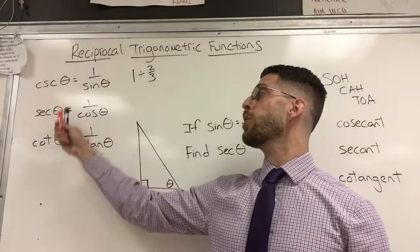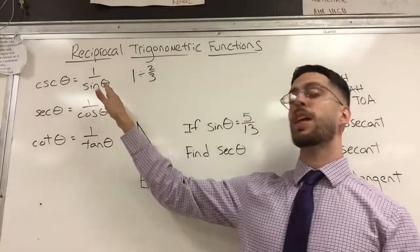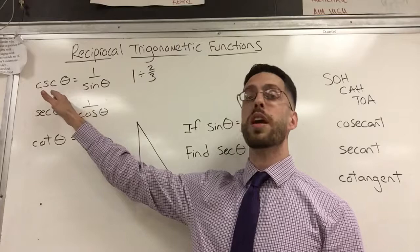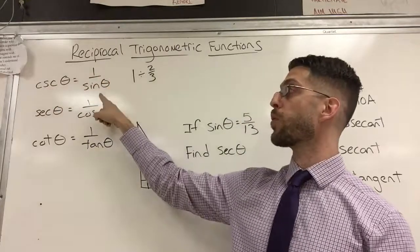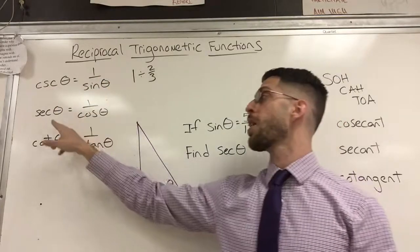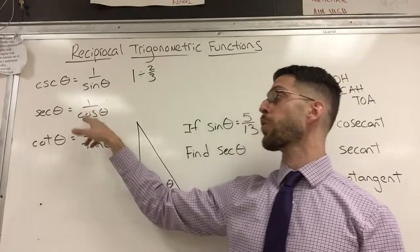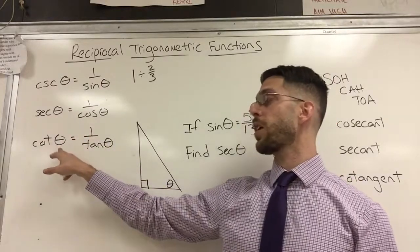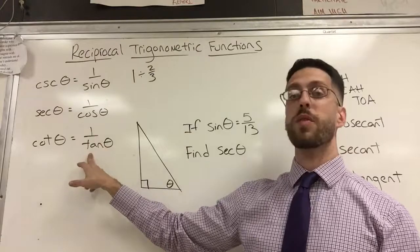So here's three new formulas that look even more complicated than they are. The cosecant of an angle is just one over the sine of that angle. The secant of an angle is one over the cosine of that angle and the cotangent of an angle is one over the tangent of an angle.